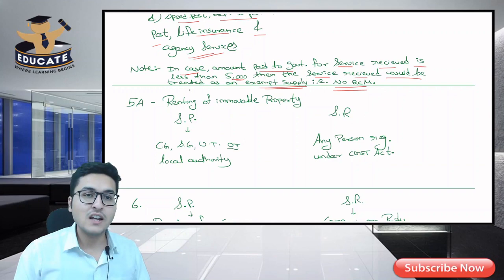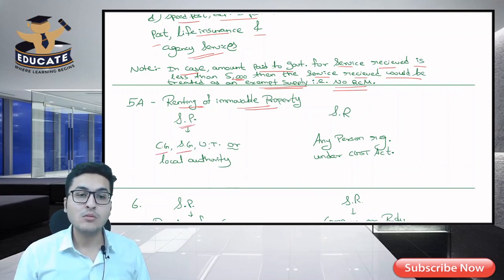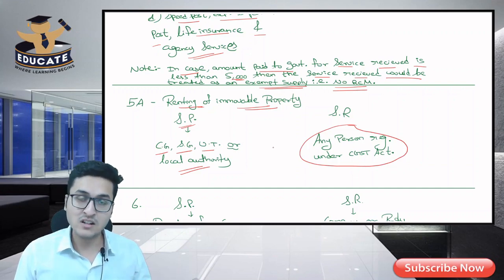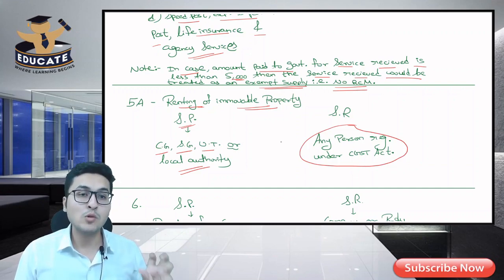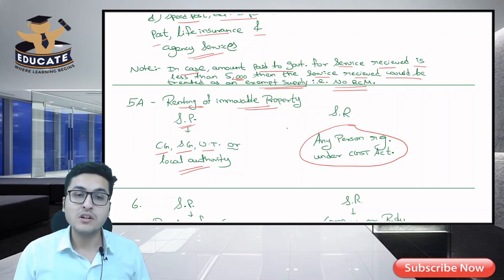Next is renting of immovable property. Who is providing the service? Central Government, State Government, Union Territory, and Local Authority. Who is the receiver? Any registered person under the CGST Act. If you are registered under the CGST Act and you receive a renting of immovable property service from Central/State Government, Union Territory, or Local Authority, then you must pay tax under reverse charge.